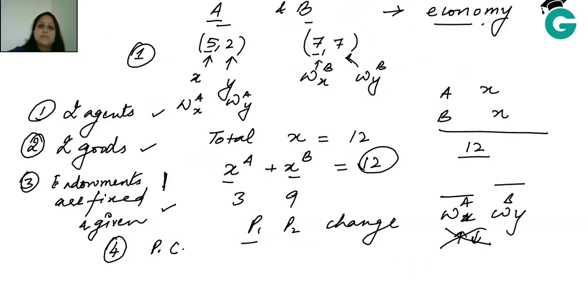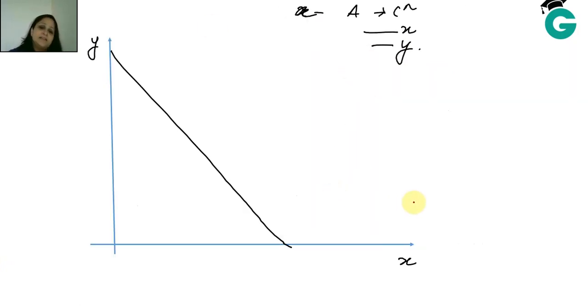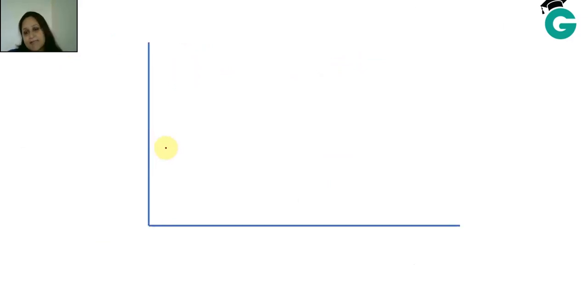But now in the Edgeworth box, we say we have two people in the economy. A has 5,2 and total economy in total X is 12. The total X in the economy is 12, and the total Y in the economy is 9. This is maximum equal to 12, so it can't extend on forever. This is maximum equal to 9.